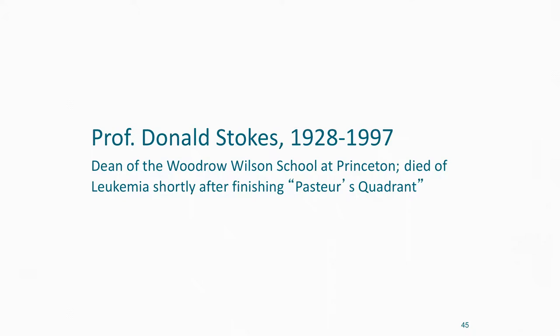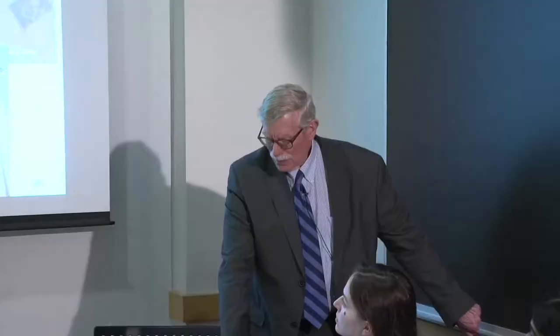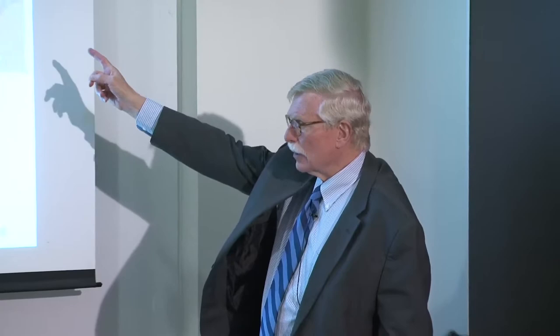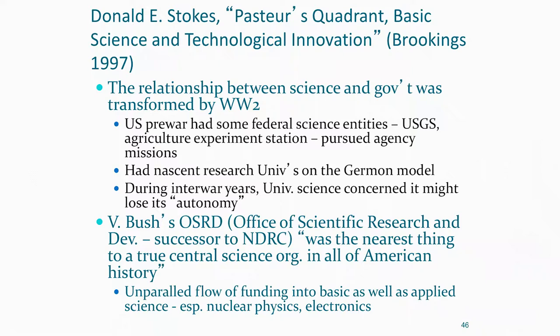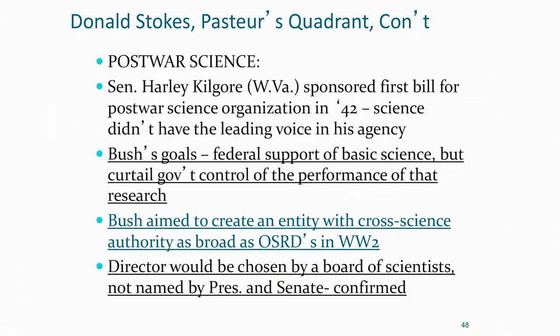Now, Donald Stokes — he was dean of the Woodrow Wilson School at Princeton, and he dies of leukemia very tragically and pretty early. Pasteur's Quadrant is the last big thing he works on. He feels these issues very strongly, as you could tell from his text. He's confronting the relationship between science and government. He takes on the Vannevar Bush basic research model and talks about its weaknesses and failures.